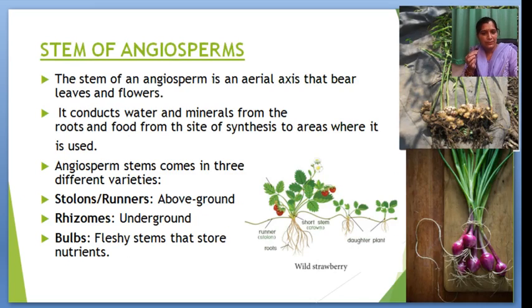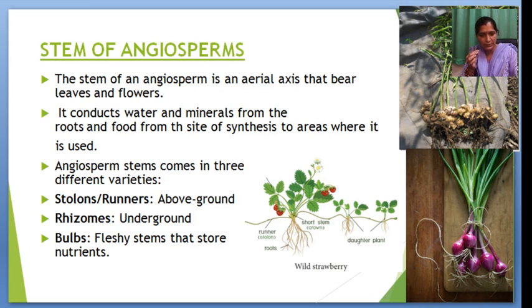Next is the stem of Angiosperms. The stem of Angiosperms is an aerial axis that bears leaves and plants. It conducts water and minerals from the root and food from the leaves to the area where it is used. The stem comes in three different varieties: first is stolon and runner, which grow above the ground; second is rhizome, which grows under the ground; and third is bulb, which is a fleshy stem that stores nutrients.